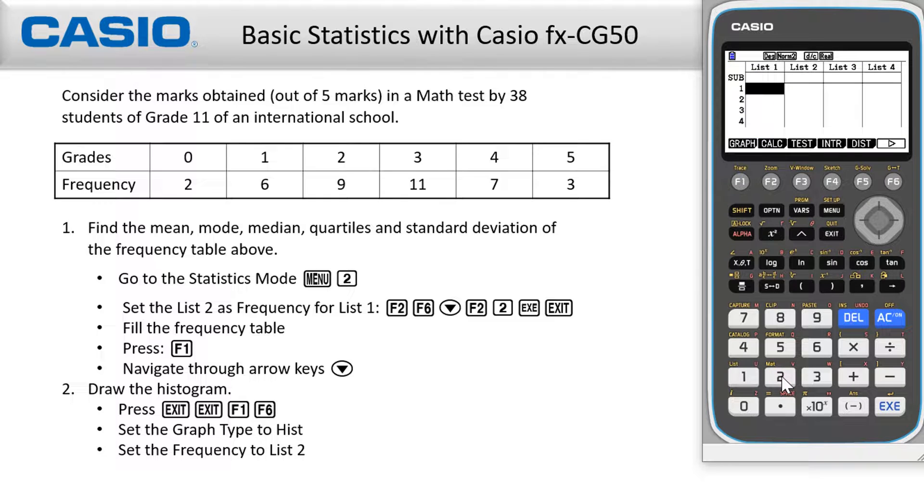Here, list one represents the grades of the students, and list two represents the frequencies.